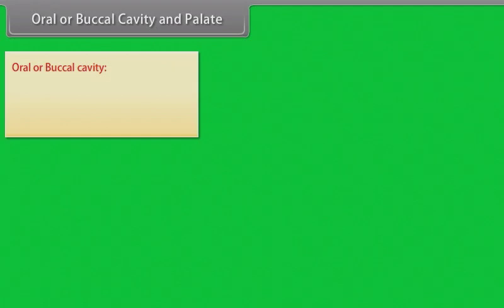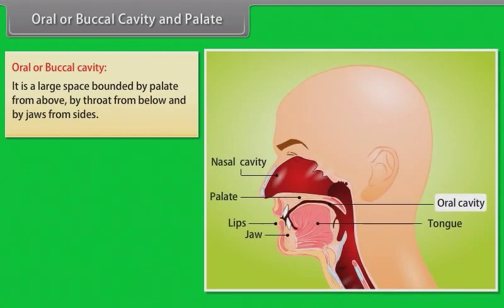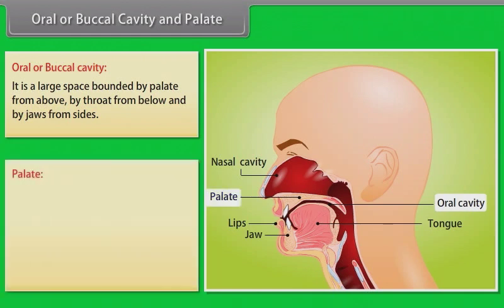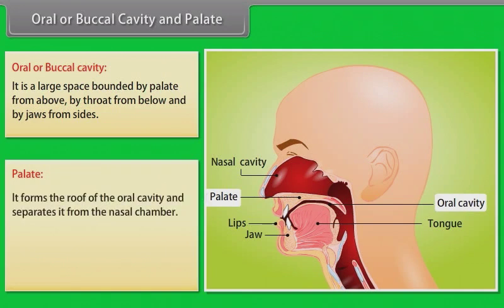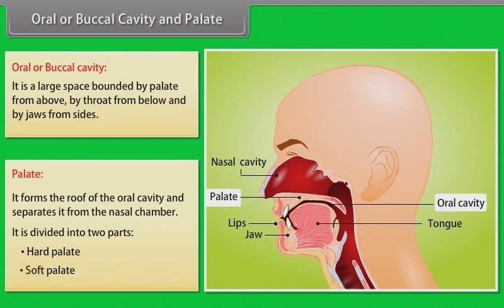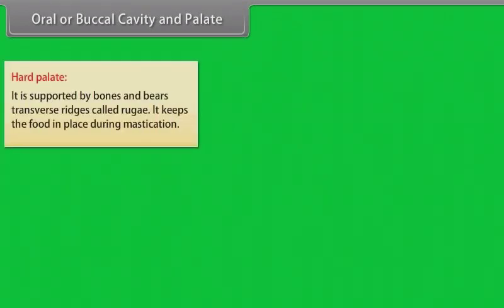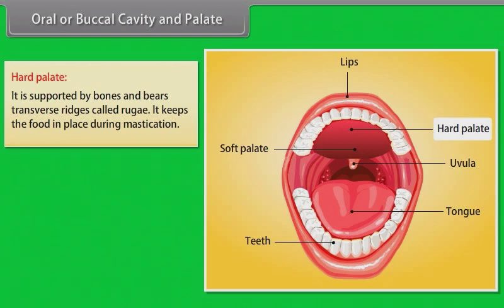The oral or buccal cavity is a large space bounded by the palate from above, by the throat from below, and by the jaws from the sides. The palate forms the roof of the oral cavity and separates it from the nasal chamber. It is divided into two parts: the hard palate and the soft palate. The hard palate is supported by bones and bears transverse ridges called rugae.